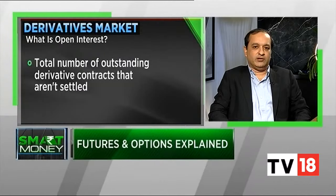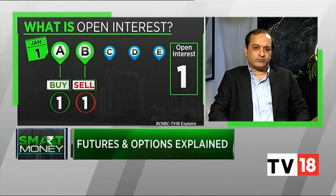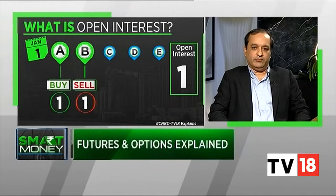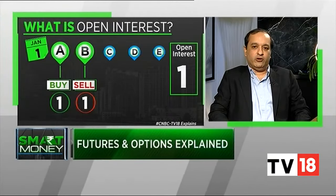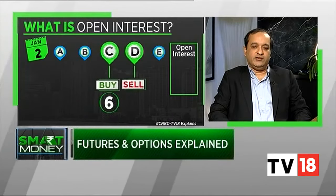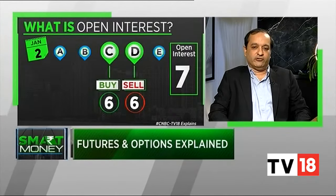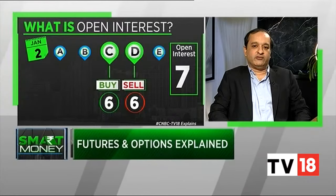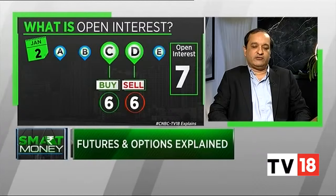Let's take an example. Say there are people A, B, C, and D. A buys a contract and B sells a contract to him — so between A and B, there is one open contract, and the open interest is one. Now, C buys six contracts and D sells six contracts to C. There are six contracts between C and D, and one already in the market between A and B. So the total open interest becomes seven.